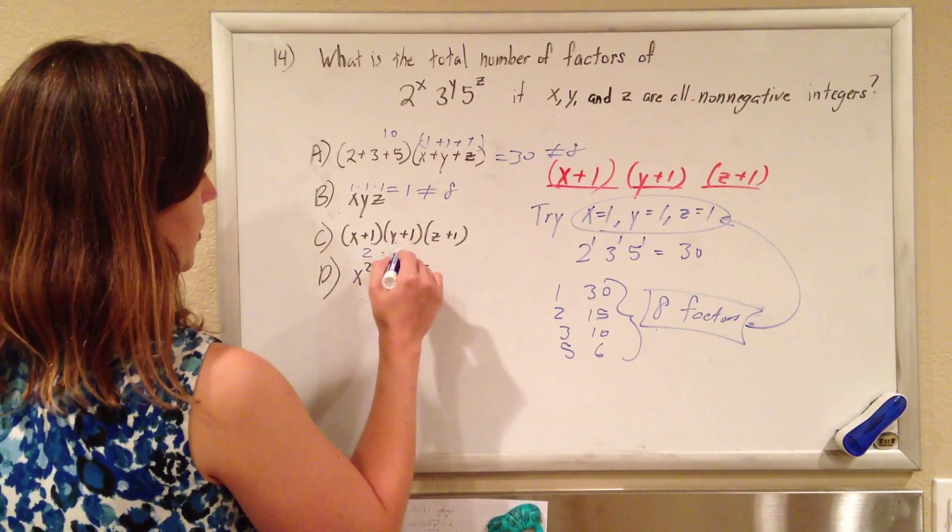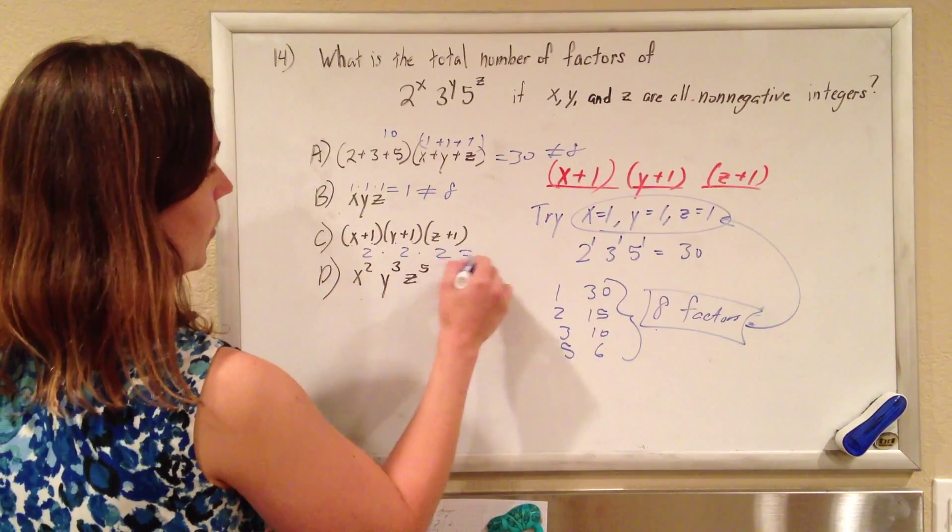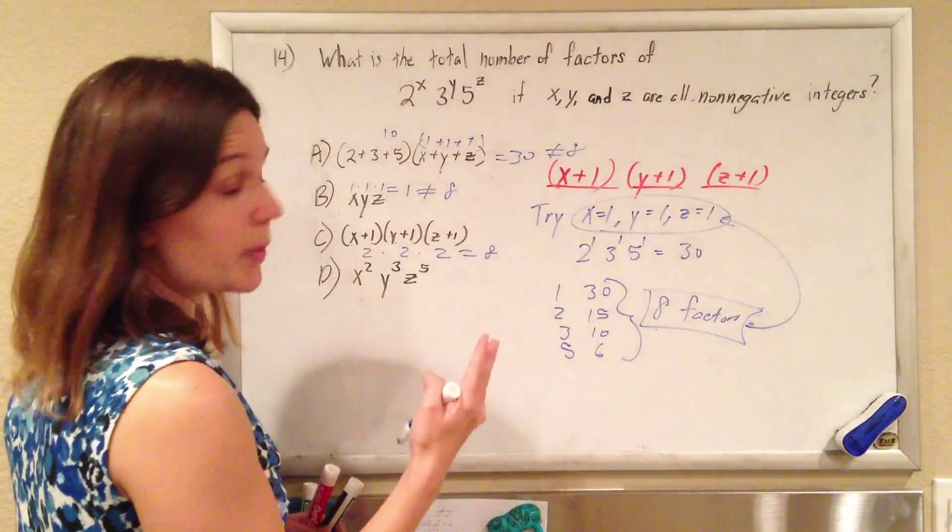This is 1 plus 1 is 2 times 1 plus 1 is 2 times 1 plus 1 is 2. Oh, that's 8. That's the possibility.